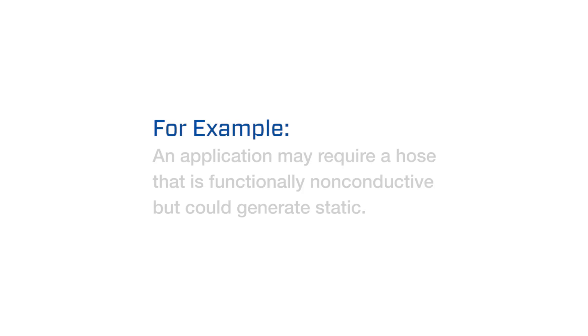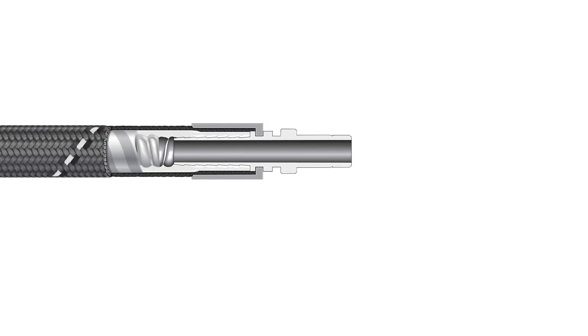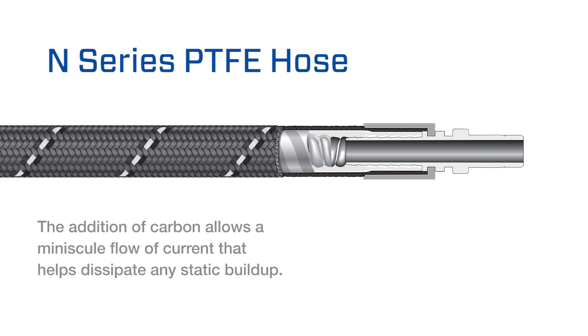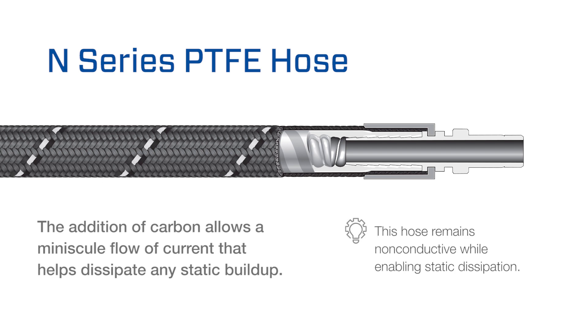For example, an application may require a hose that is functionally non-conductive but could generate static. An effective way to enable soft core hoses to dissipate static is to infuse them with a carbon material. The addition of carbon allows a minuscule flow of current that helps to dissipate any static buildup, allowing the hose to remain functionally non-conductive while simultaneously enabling static dissipation.